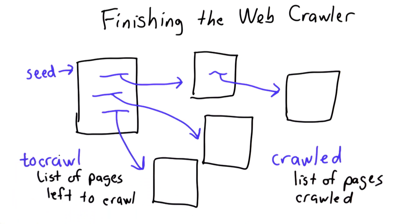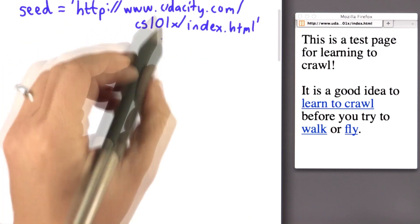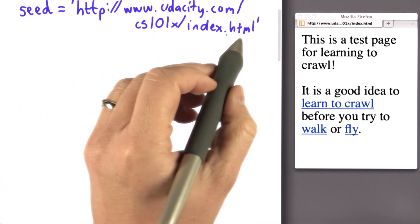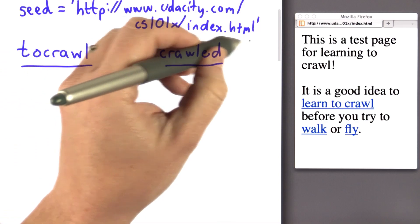So let's walk through an example of how this should work on the sample site. So I'll make the seed page www.udacity.com/cs101x/index.html. That's this page here. That means when we start to crawl, we want to crawl to be this index page.